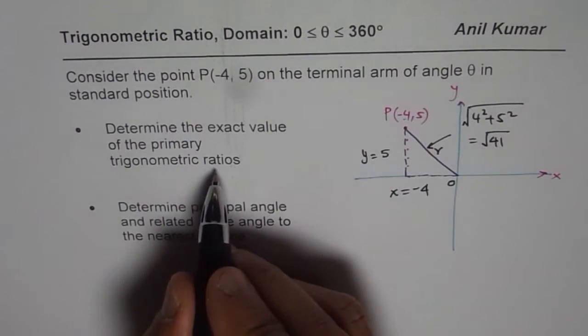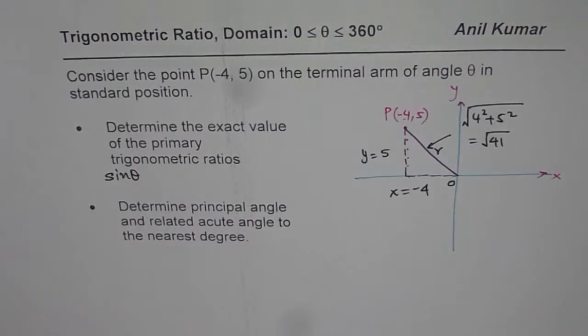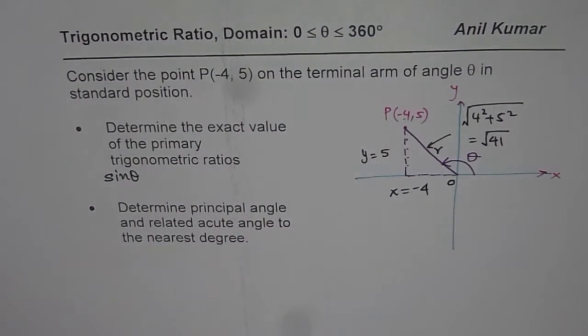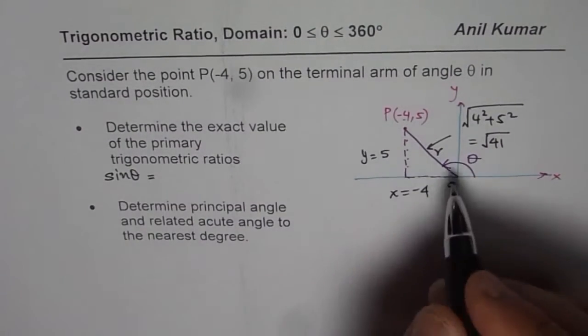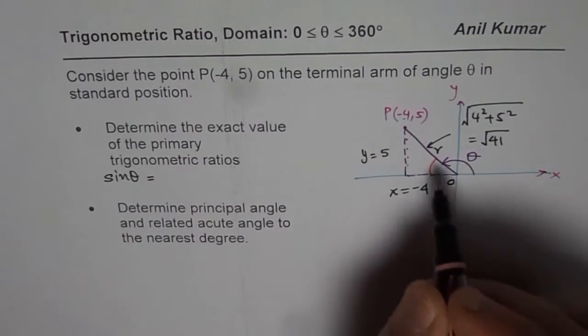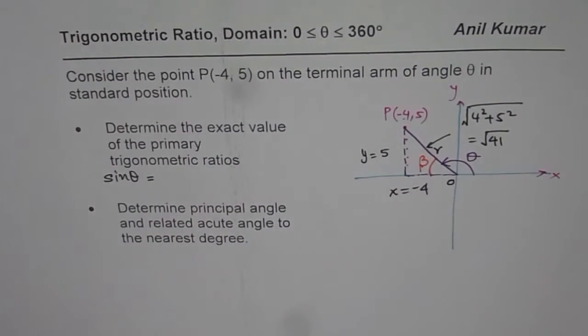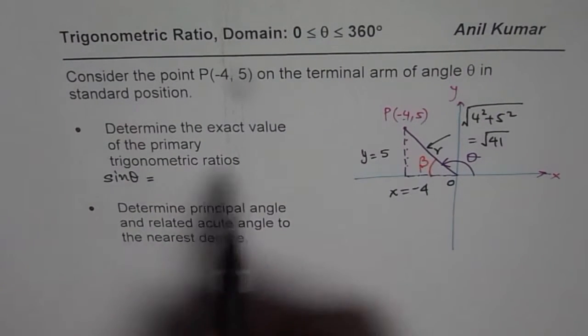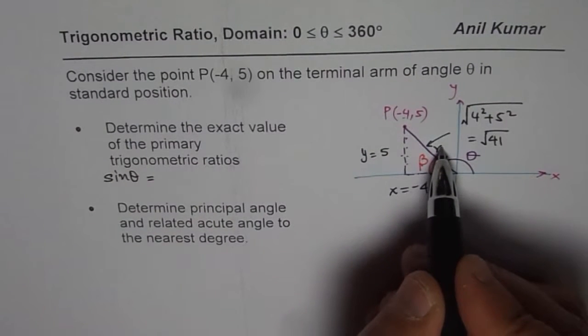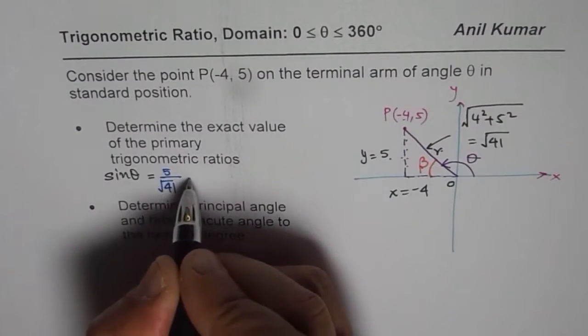What is primary trigonometric ratio? Primary trigonometric ratio is sine theta. We are looking for the principal angle theta. We can also see that we have an acute angle here. We can actually find with this acute angle, let us call this beta. For sine theta, it is opposite over hypotenuse. Opposite side is 5, so we have 5 over square root of 41.